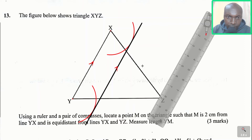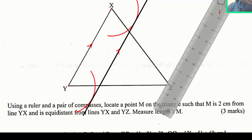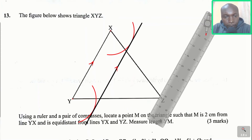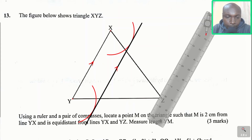Now that is the first condition. The second condition is that the same point M is equidistant from line YX and YZ. We are supposed to construct the locus of a point equidistant from these two lines. The locus of a point equidistant from two lines is the angle bisector between the two lines.